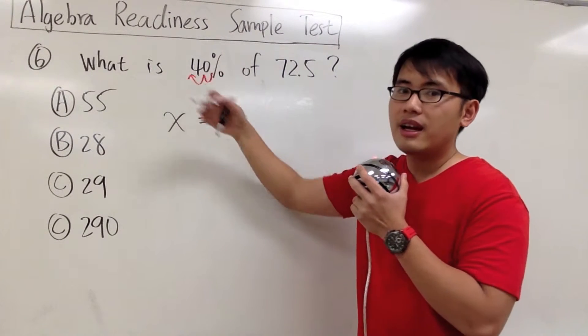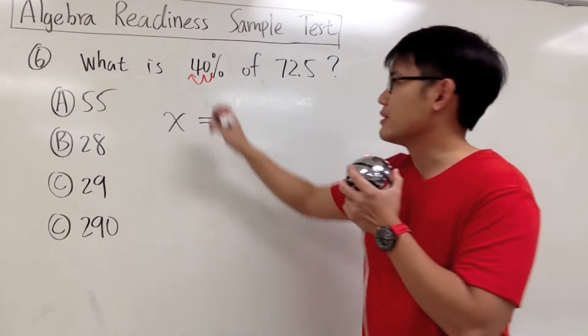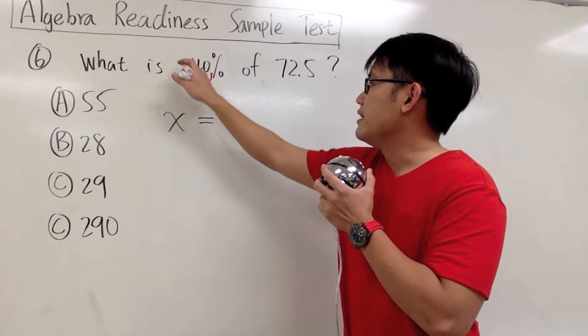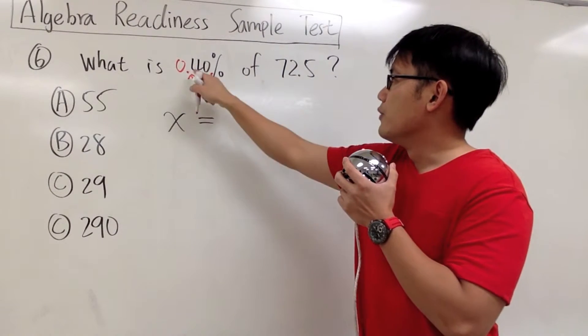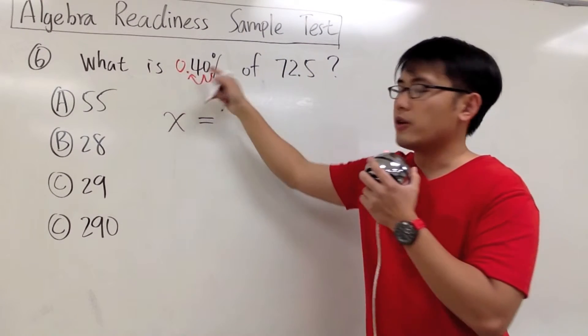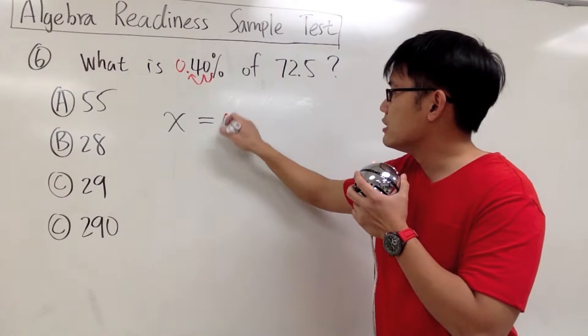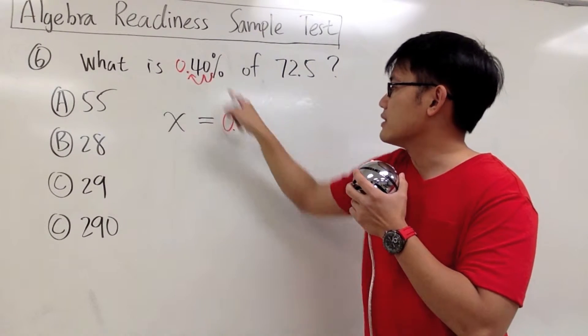to the left. That's where the new decimal point is going to be, right here. I can indicate a 0 in front - 40% is 0.40, or simply 0.4.